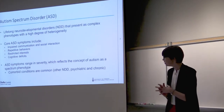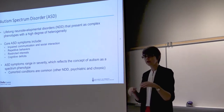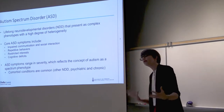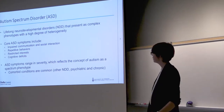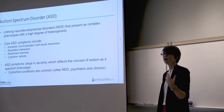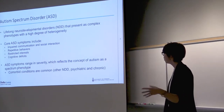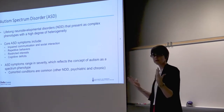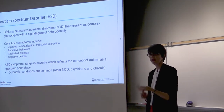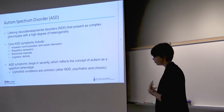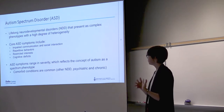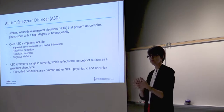I'm going to provide a little bit of context so you can understand the framework for the particular setting I'm going to be discussing. I'm sure you're familiar with the idea of autism spectrum disorder. It's a collection of lifelong neurodevelopmental disorders that have very complex phenotypes and are very heterogeneous. There are a certain set of core autism symptoms related to impaired communication and social interactions, repetitive behaviors, and some sensory processing issues. These core symptoms can range in severity, which is where we get the concept of autism as a spectrum phenotype.